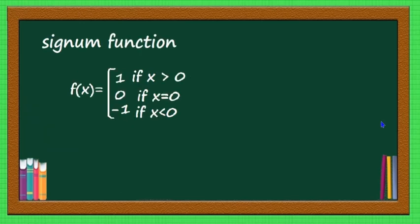I will take one more example to understand better. Take the signum function: f(x) = 1 when x > 0, f(x) = 0 when x = 0, and f(x) = -1 when x < 0. What is the limit as x tends to 0+? Here, 0+ means slightly greater than 0, so x is positive and f(x) = 1. Therefore, limit x tends to 0+ of f(x) is 1.